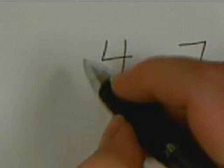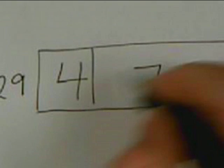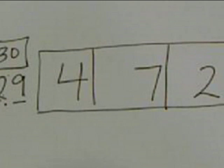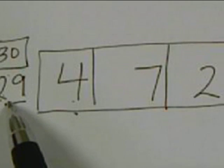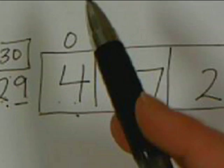If we have 472 divided by 29 — first thing we do is box up the numbers, then round. 29 will round to 30 because 9 is bigger than 5, so the 2 goes up to a 3 — round to 30. The first box is a 4. 4 is less than 29, so only 0 times 29 will keep me from going over: 0 times 29 is 0, and 4 minus 0 is 4.